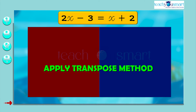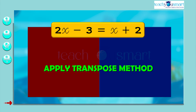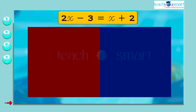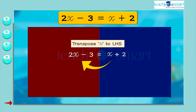We can also find the value of x using the transpose method. In the equation 2x minus 3 equals x plus 2, transpose x to the LHS to remove the variable part from the RHS. That is, 2x minus 3 minus x equals 2, which gives x minus 3 equals 2.